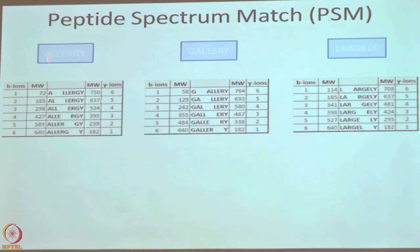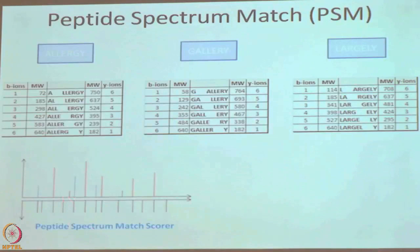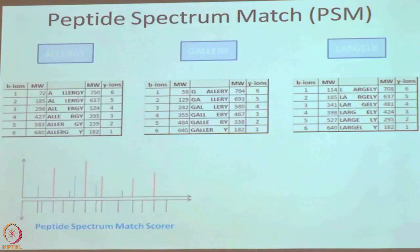Here is an example: three words — allergy, gallery, and largely — are constituted of the same alphabets, so the amino acid composition is the same, but the peptides are different. In that case the answer lies in the MS/MS fragmentation pattern; the fragments generated from these three peptides are matched with a peptide spectrum match score. Different algorithms like Mascot, Sequest, and X!Tandem will differ in the way they give a score, but it depends on the method to decide what the passing score is.